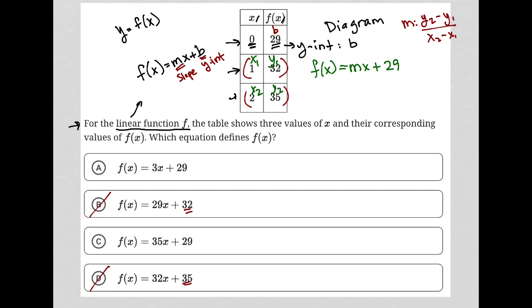To plug those numbers in: y2 is 35, y1 is 32, x2 is 2, x1 is 1. 35 minus 32 is 3, 2 minus 1 is 1. Therefore, my slope, my m value, is equal to 3.